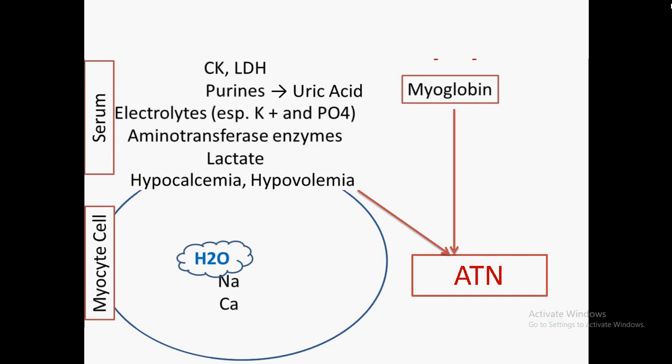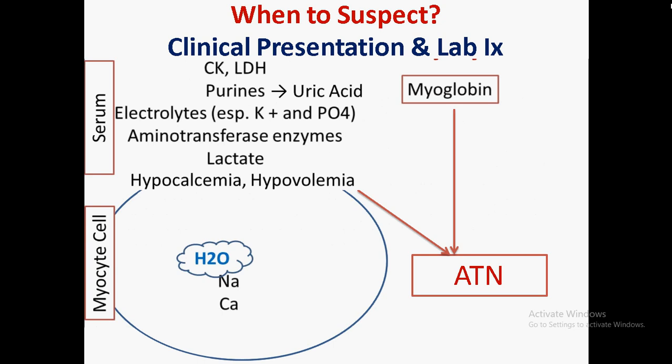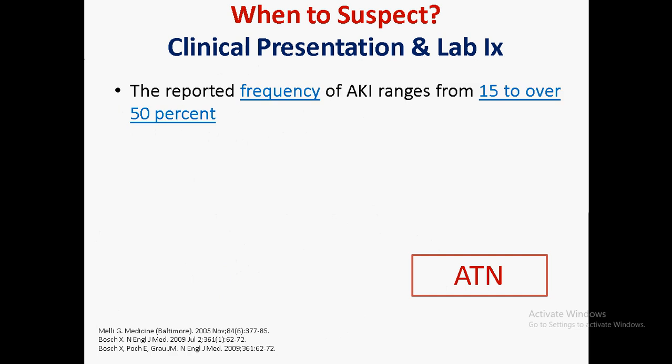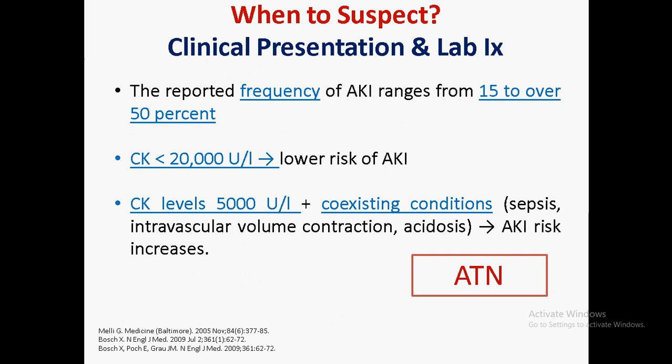This is the basic bedside talk of rhabdomyolysis. I will divide the clinical presentation and lab investigations into four areas. Regarding ATN: the reported frequency of acute kidney injury in rhabdomyolysis is about 15 to 50 percent. If CK is lower than 20,000, there is a lower risk of AKI, although co-existing conditions such as sepsis or acidosis may increase that risk. Not all rhabdomyolysis cases are always associated with acute tubular necrosis, especially if the physician intervenes early.